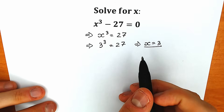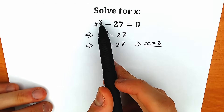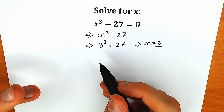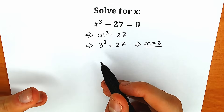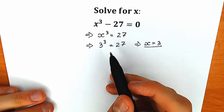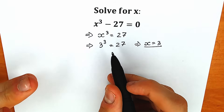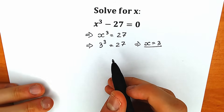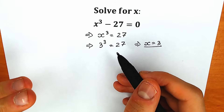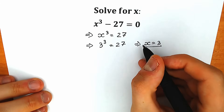But according to the fundamental theorem of algebra, when we have the third power, it means that we will have three roots — no more than three roots. So the correct way to solve this question is to find all of these roots. Just finding x=3 is not a perfect solution.